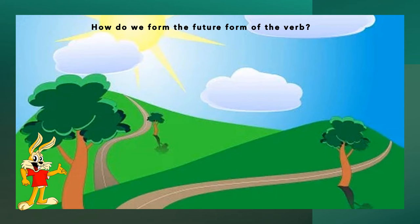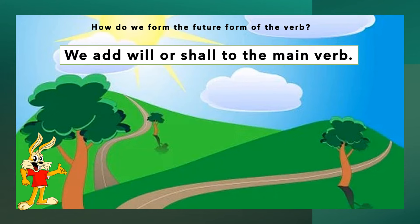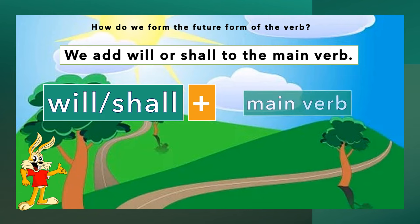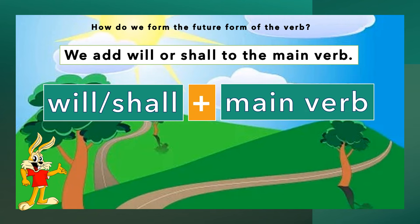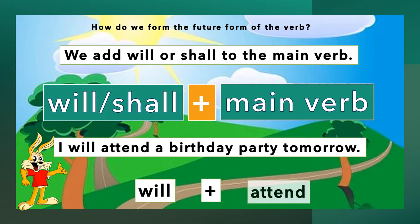How do we form the future tense of the verb? We add will or shall to the main verb — will or shall plus main verb. For example: I will attend a birthday party tomorrow. We use will plus the verb attend to form the future tense of the verb in a sentence.